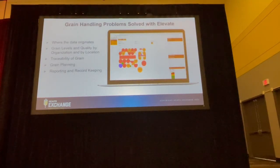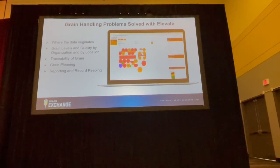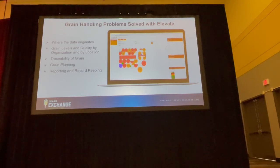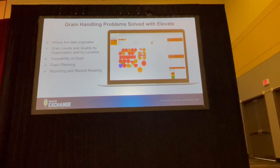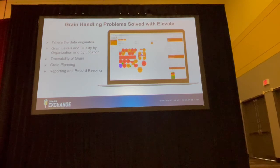We are an ERP accounting system based out of Hutchinson, Kansas, recognizing our 26th year in business this coming year. Elevate is a new platform that we've developed to allow you to track your inventory bin by bin, location by location, as well as traceability of how the grain moves through your facility.